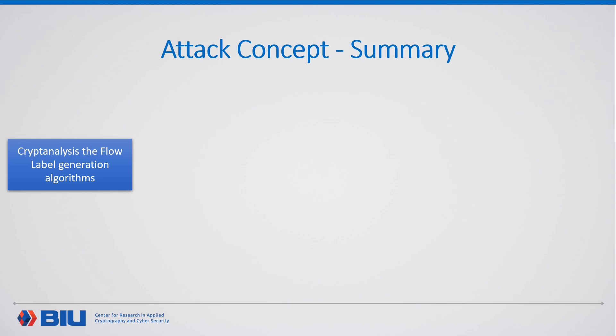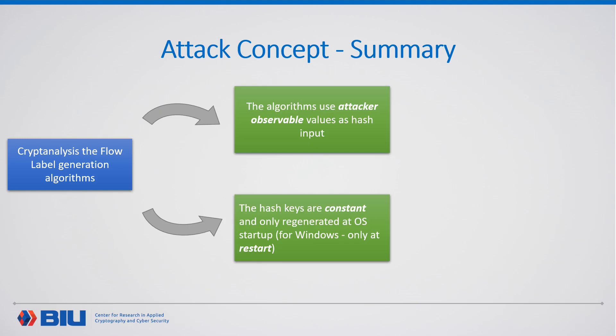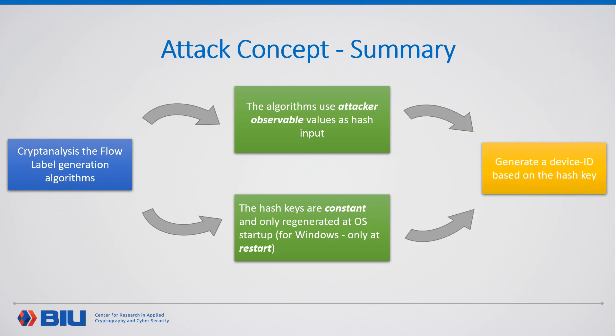Let's sum it up. From the cryptanalysis of the flow label generation algorithms, we got that they are based on hash functions which use attacker-observable values and a static key that is regenerated only at startup. This allows us to generate a device ID based on extracting the hash key, or parts of it, that can then be used for tracking devices.